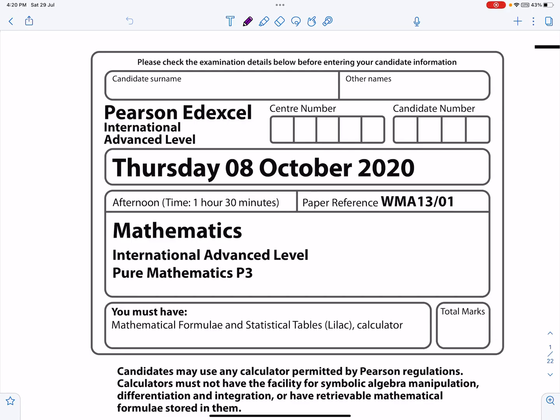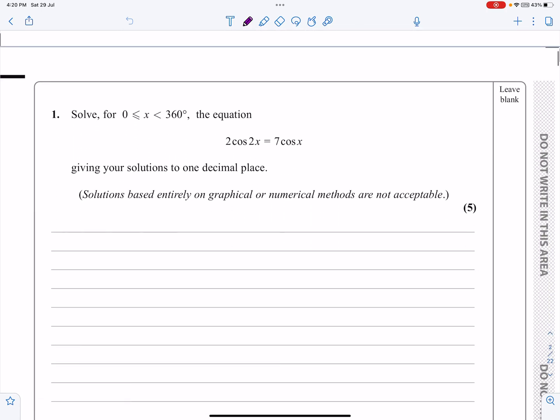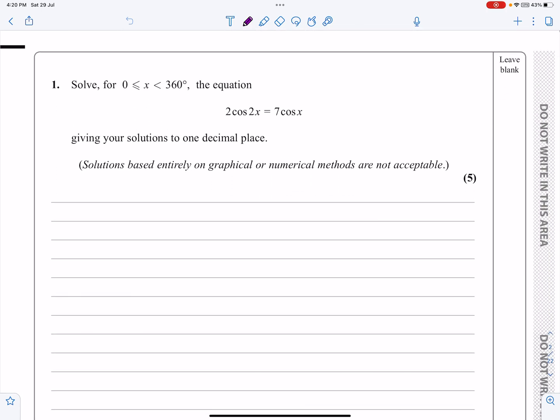Okay, this is the P3 paper for October 2020. We're going to look at question number one here, which we can see straight away is a trig equation, but it's a trig equation where we're going to be using the double angle formulae to turn it into, hopefully into a quadratic, I would have thought.